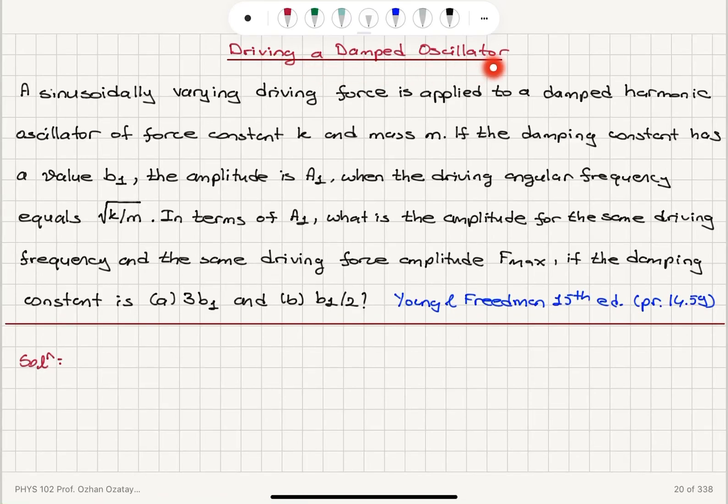Driving a damped oscillator. A sinusoidally varying driving force is applied to a damped harmonic oscillator of force constant k and mass m. If the damping constant has a value b₁, the amplitude is a₁ when the driving angular frequency equals square root k over m. In terms of a₁, what is the amplitude for the same driving frequency and the same driving force amplitude f_max if the damping constant is 3b₁ or b₁ over 2?